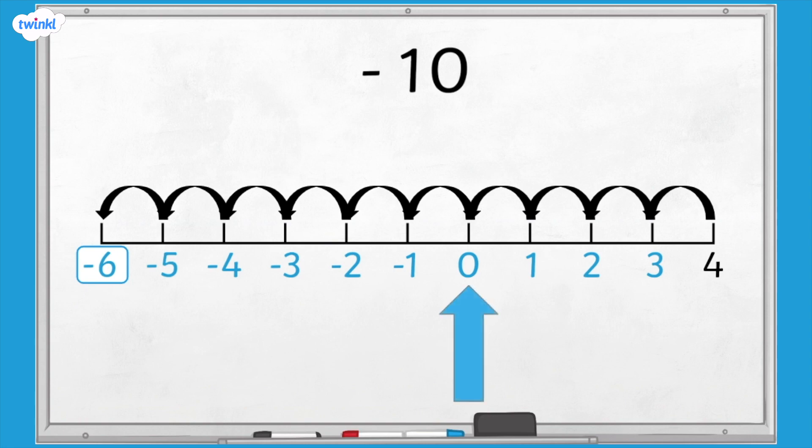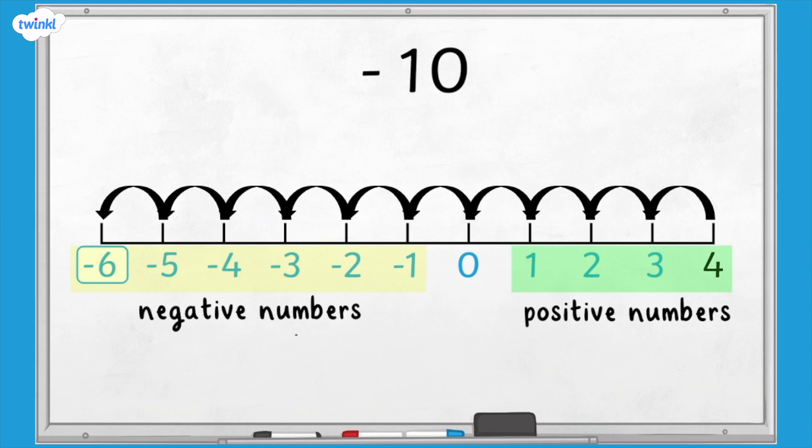What happens after zero when we count back? Numbers less than zero are negative numbers. So on our number line, negative 1, negative 2, negative 3, negative 4, negative 5, negative 6 are all negative numbers. 1, 2, 3, and 4 are all positive numbers. Zero is not a positive number or a negative number.